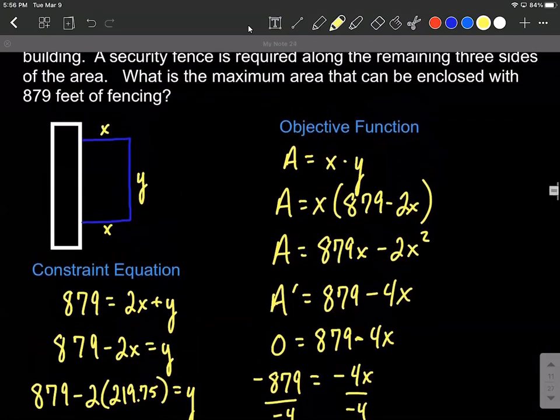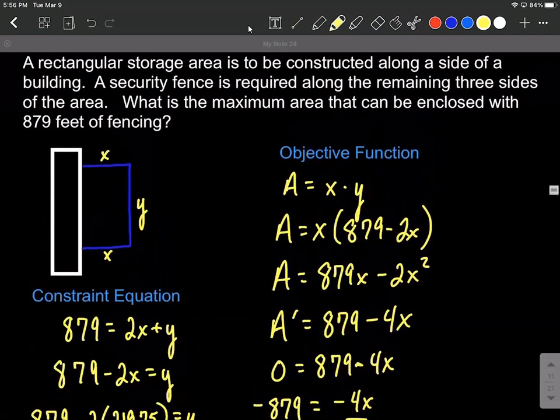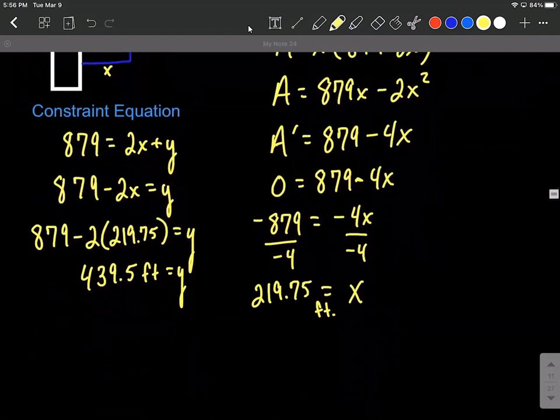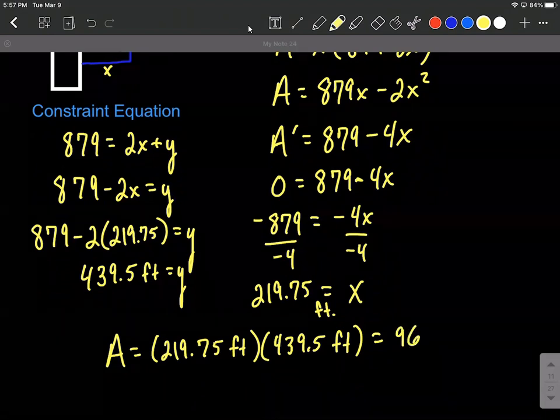Now we know our dimensions, but we wanted to maximize the area using this much fencing. If we were additionally asked what is the maximum area that can be enclosed, go back to A equals X times Y and just plug in 219.75 feet multiplied by 439.5 feet, which gives us 96,580.125 square feet can be enclosed.